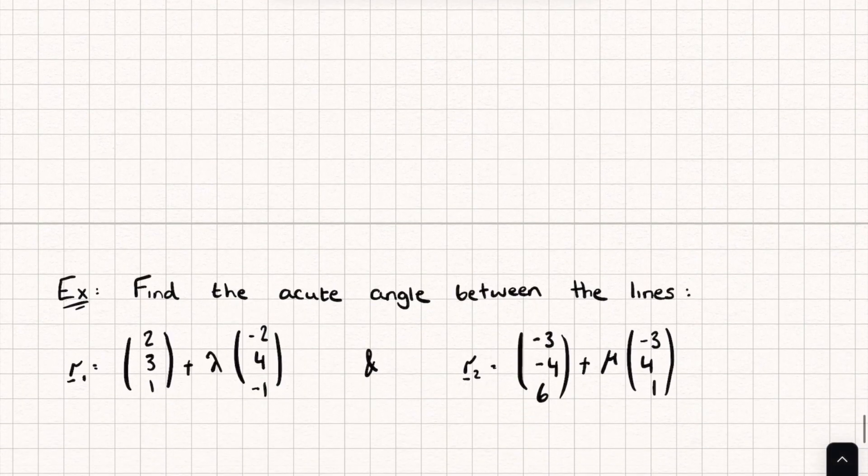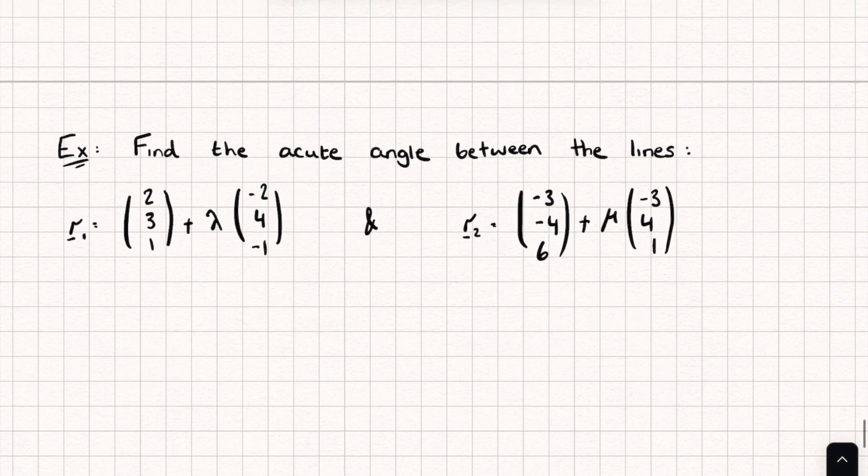Okay then, so let's first look at an example. So here we're asked to find the acute angle between the two lines. So here we've got a line R1 and a line R2. Now to really demonstrate what's going on here, I'm going to put a visual on screen with these two lines and hopefully it will help us to make sense of it.